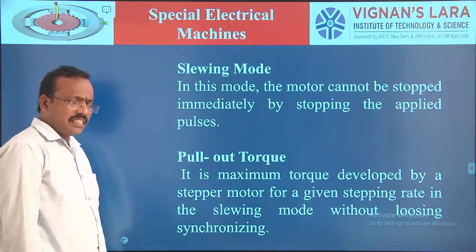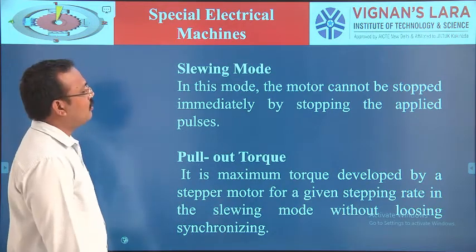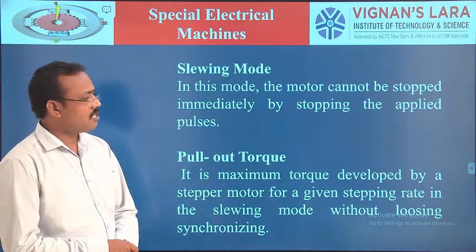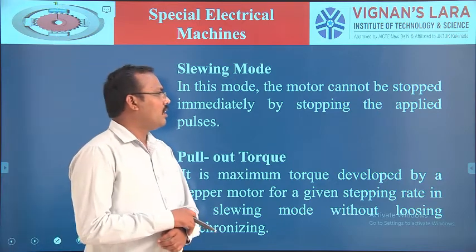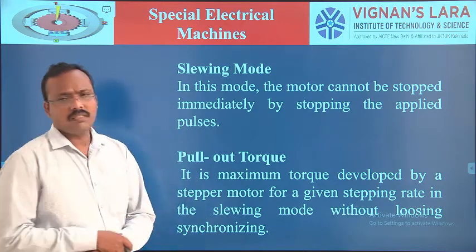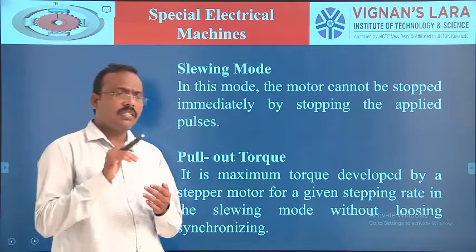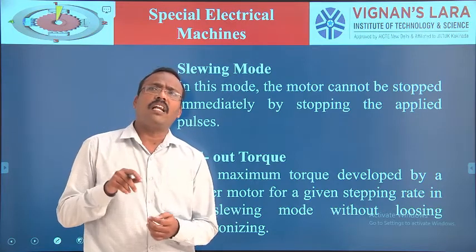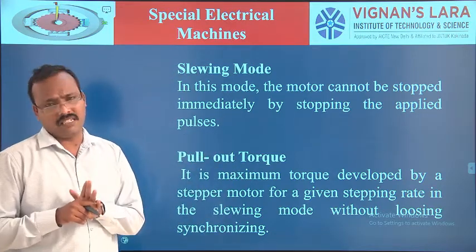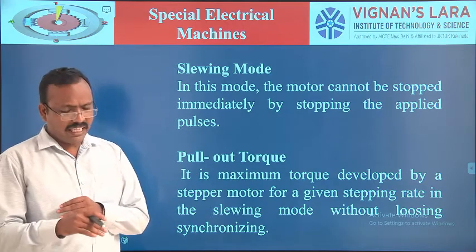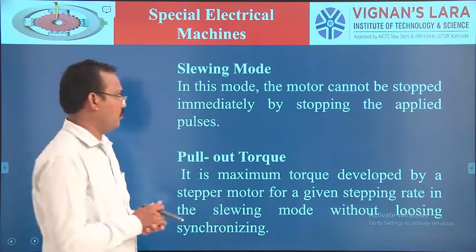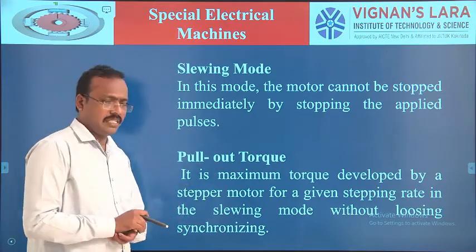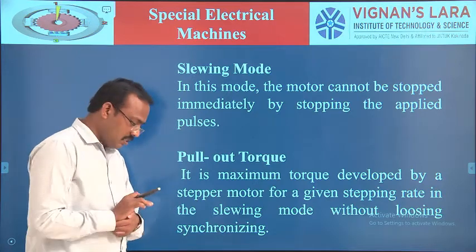The next one is slewing mode. In this mode, the motor cannot be stopped immediately by stopping the input pulses. Consider a motor that is running and stepping — that motor cannot stop immediately. It will take some time. That mode is called slewing mode. So in slewing mode, the motor cannot stop immediately by stopping the input pulses.